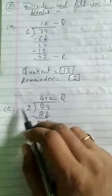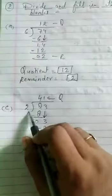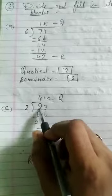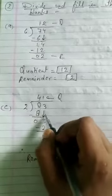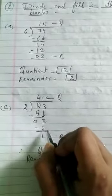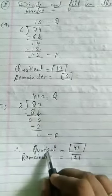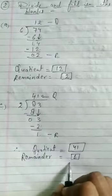Next question C. We have to divide 83 by 2. 2 fours are 8. 8 minus 8 is 0. 3 will come down as is. 2 ones are 2. 3 minus 2 is 1. 1 is remainder and 41 is your quotient. Remainder is equal to 1.